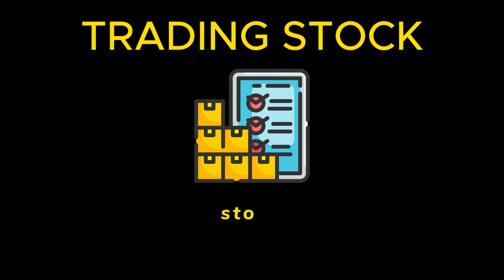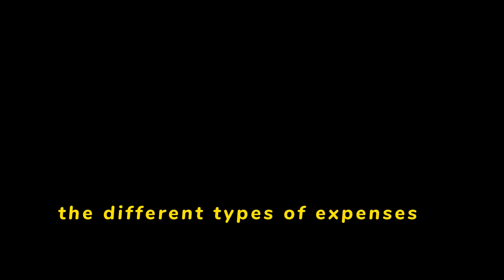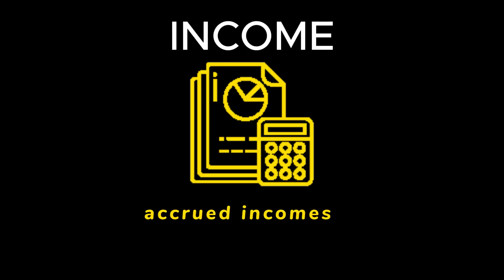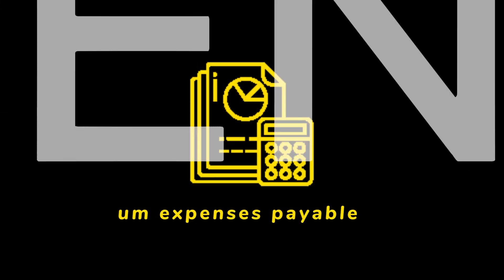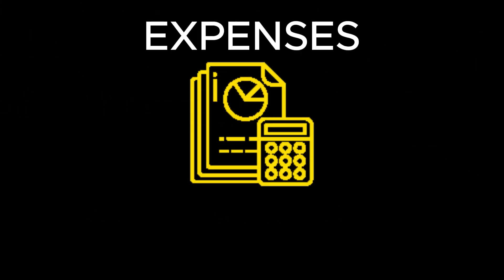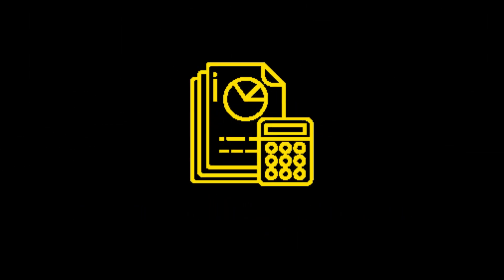Number two, we'll be looking at trading stock — trading stock deficits and surpluses — the different types of expenses: accrued expenses, accrued incomes, expenses payable, consumable stores in hand, deferred income, and the likes.